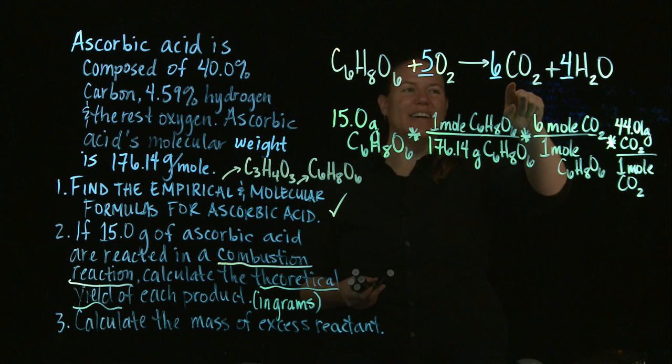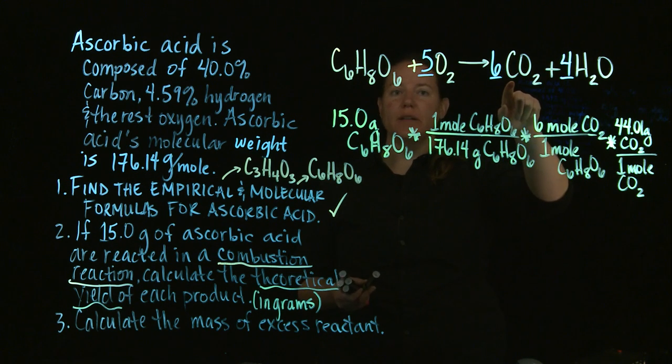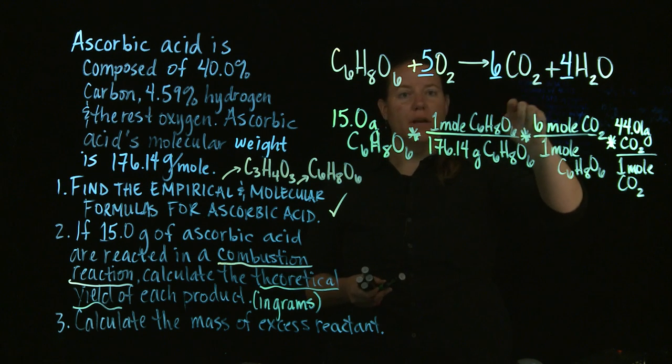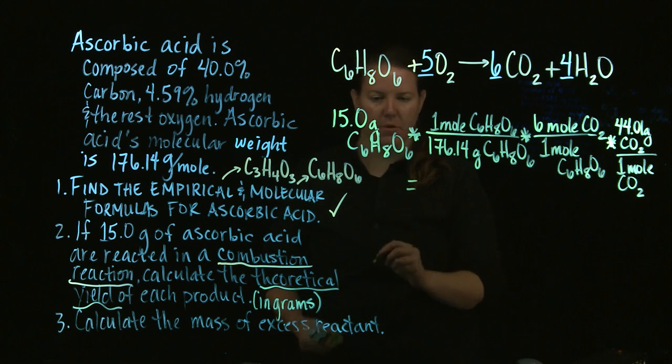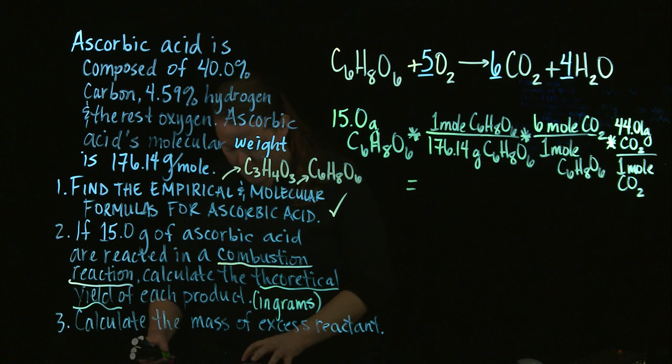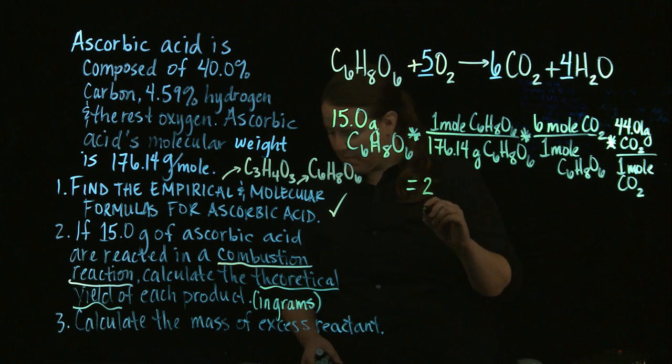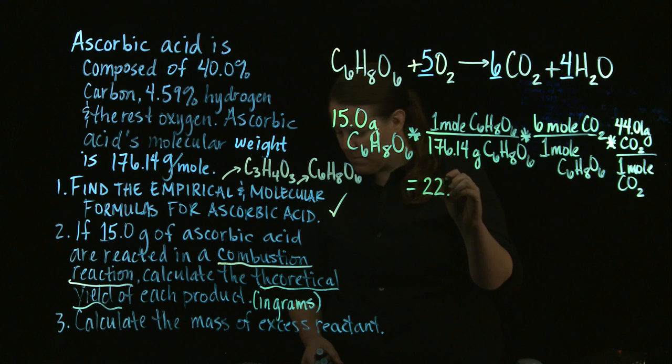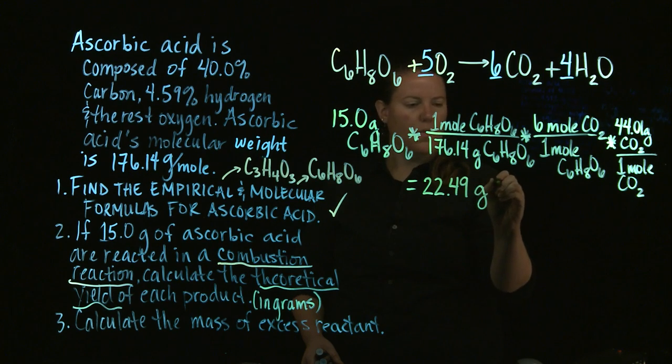How did I get the molar mass of carbon dioxide? I just knew it. But if you don't just know it, what you would do is you would calculate, you would look at the periodic table for C, figure out that the molar mass of C is 12.01. The molar mass of O is 16. Multiply 12.01 times 1, because there's one C. Multiply 16 times 2, because there's two O's. Add them together, 44.01 is the number you should get. And if I calculate this out, I get 15 divided by 176.14 times 6 times 44.01. 22.49 grams of CO2.